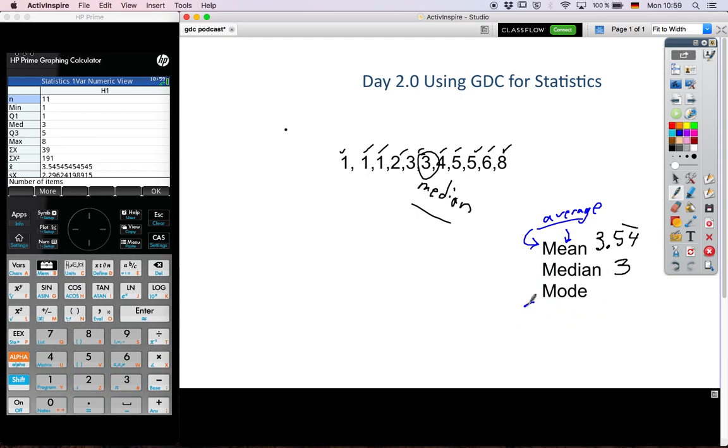Mode? Mode is not on the calculator. I think the calculator is assuming that's easy enough for us to see. So we're looking at the one that comes the most frequently in the data set. So I think that would be one here, yeah. Excellent.